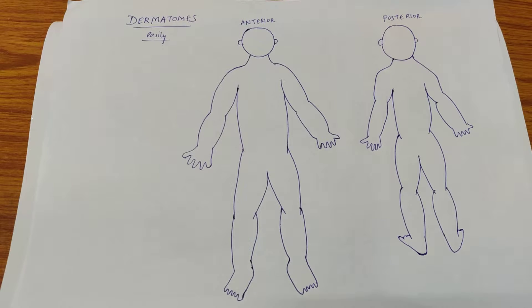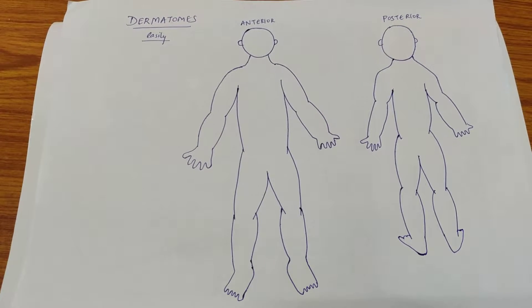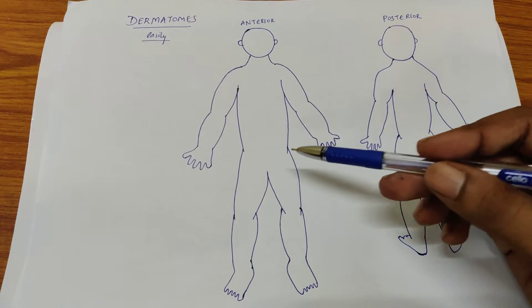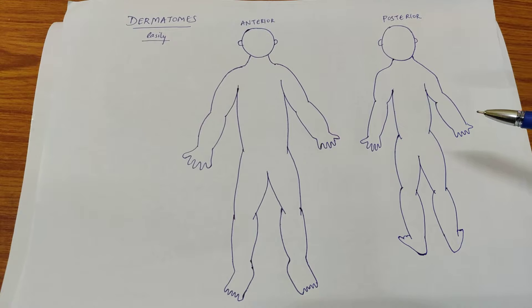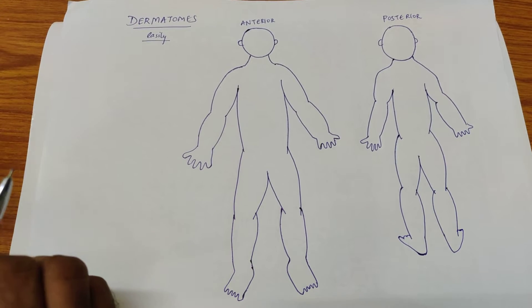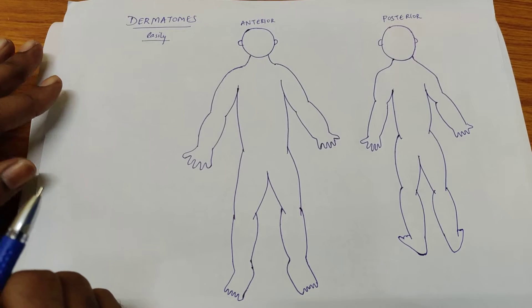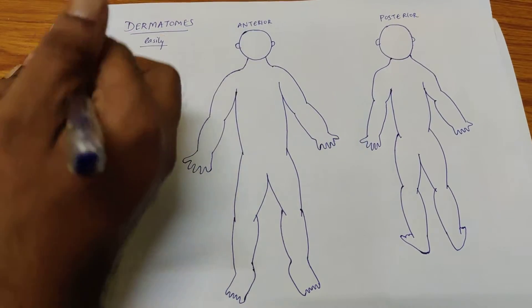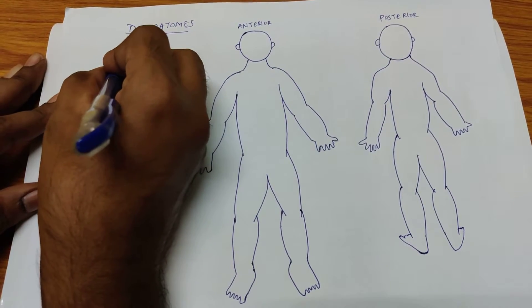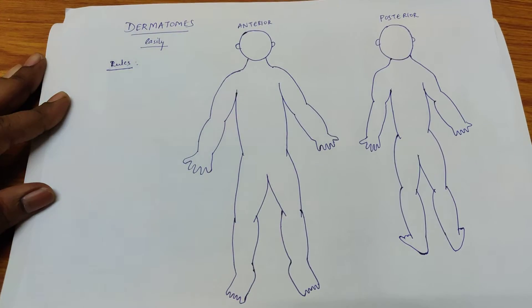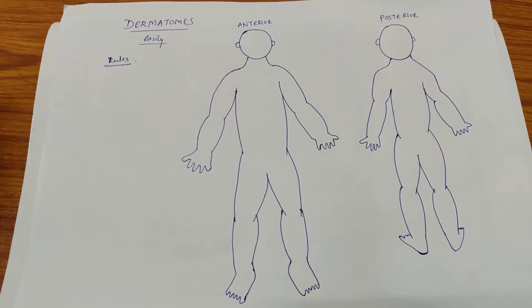Hello everyone, welcome to Medical Maniacs. Today I am going to teach you how to remember the dermatomes easily. These are the two rough diagrams — anterior and posterior view of the human body in anatomical position. Before we go to the mnemonic, there are a few rules which you have to remember so that you can remember the whole dermatomes easily.